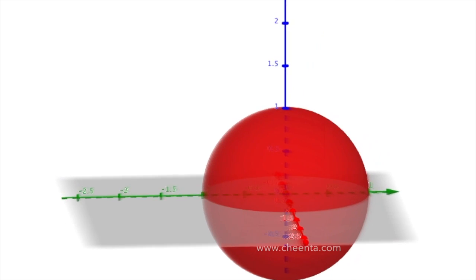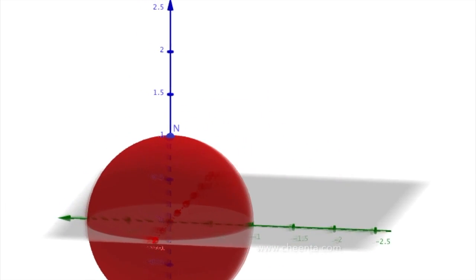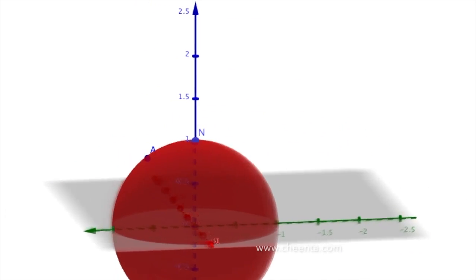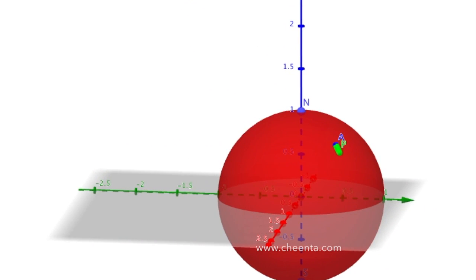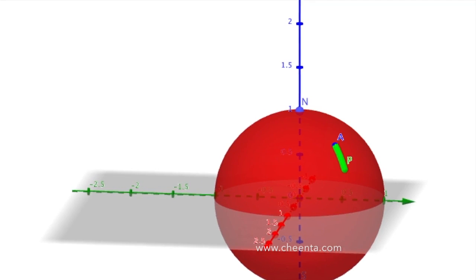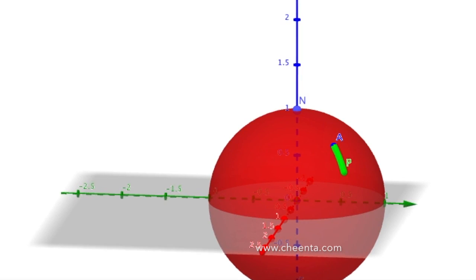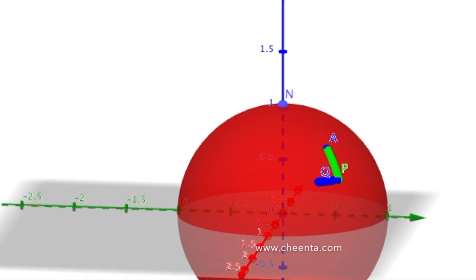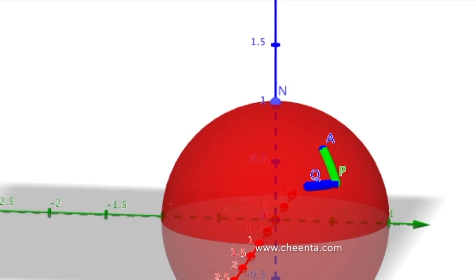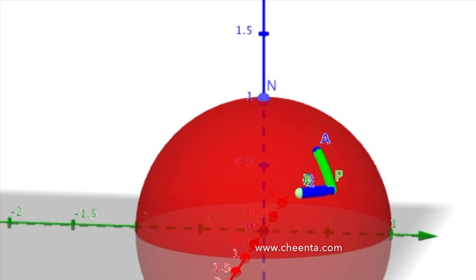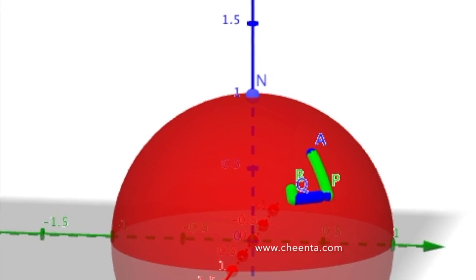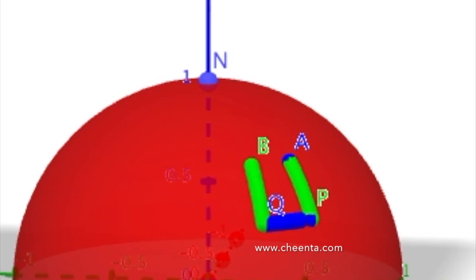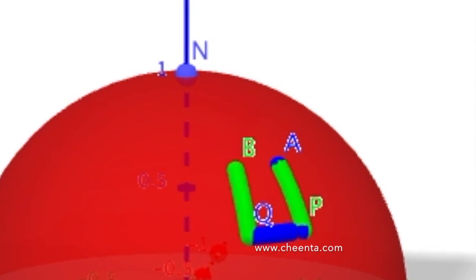What if we are on the surface of a sphere? Suppose we start at some point A, then walk one mile south to reach P. Walking south on the surface of the sphere means walking along the longitude lines. Next we walk one mile east to reach Q — walking east means moving along a latitude line. Finally, we walk one mile north along a longitude line to reach point B. Interestingly, B is a bit closer to A than Q is to P.